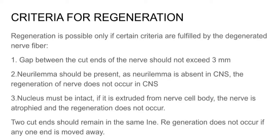Criteria for regeneration: regeneration is possible only if certain criteria are fulfilled by the degenerated nerve fiber. The gap between the cut ends of the nerve should not exceed 3 millimeters. Neurilemma should be present — as neurilemma is absent in the CNS, regeneration of nerves does not occur in the CNS. The nucleus must be intact; if it is separated from the nerve cell body, the axon becomes atrophic and regeneration does not occur. The cut ends must remain in the same line — regeneration does not occur if any end is moved away.